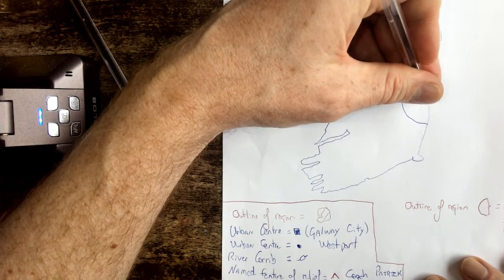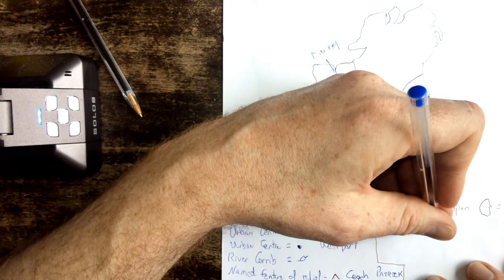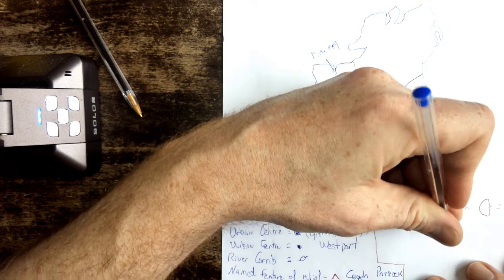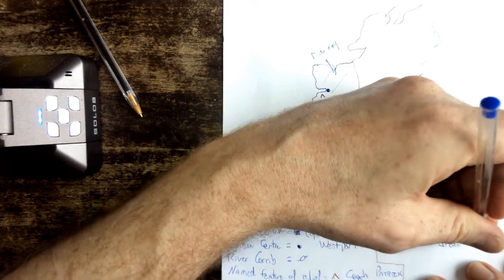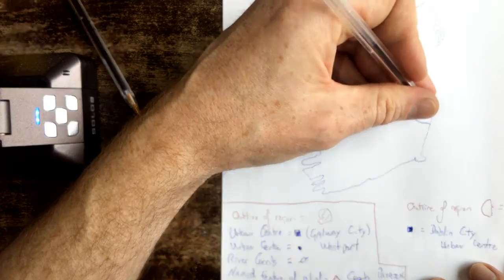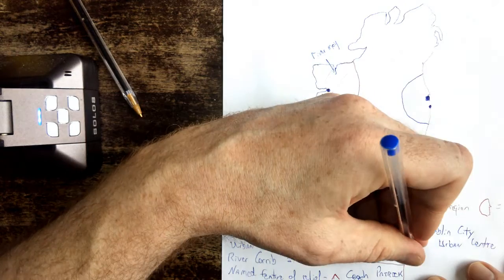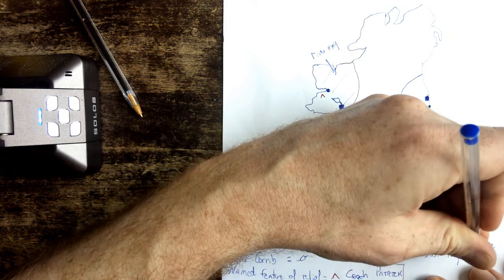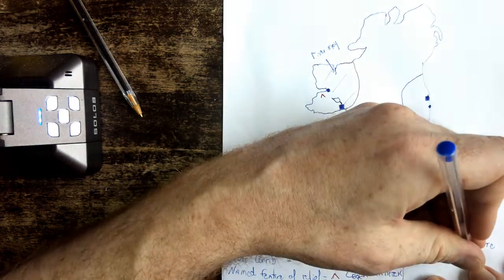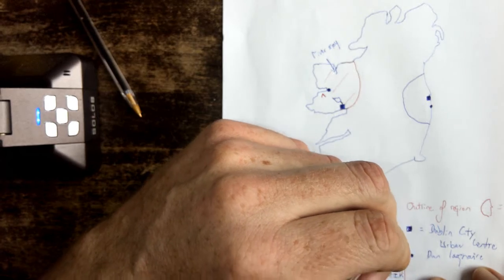And I'll draw on an urban centre. Main urban centre, you can just go south of Dublin city, you can put in Bray or Dunleary, I'm going to put in Dunleary. Any of you guys who are from Dublin or from other parts of the GDA, Meath, Kildare, Wicklow, you can put in whichever town you'd like in there.